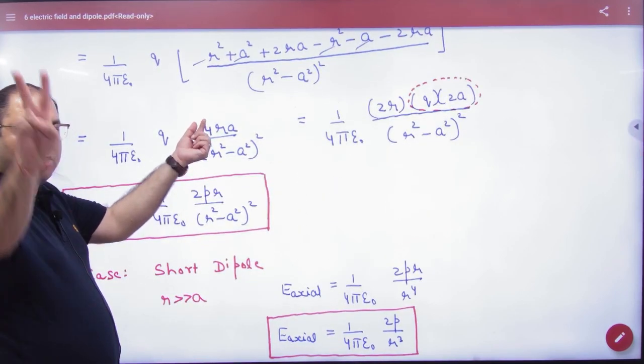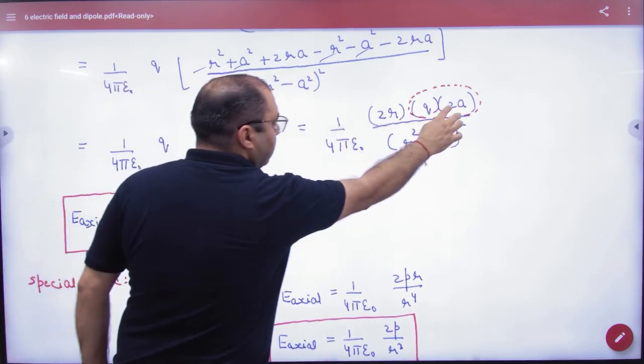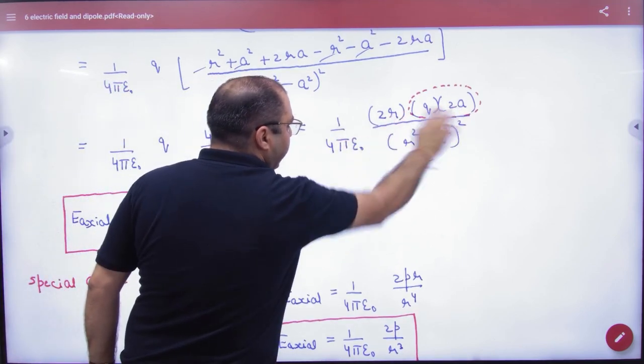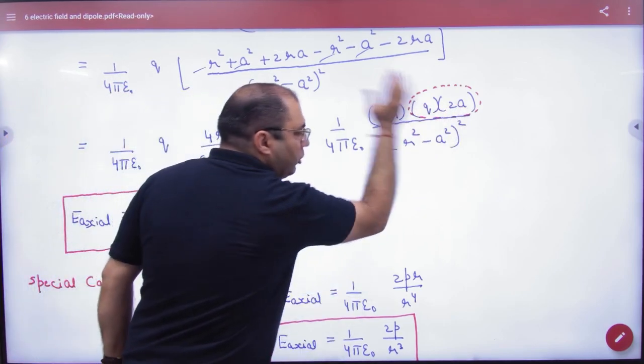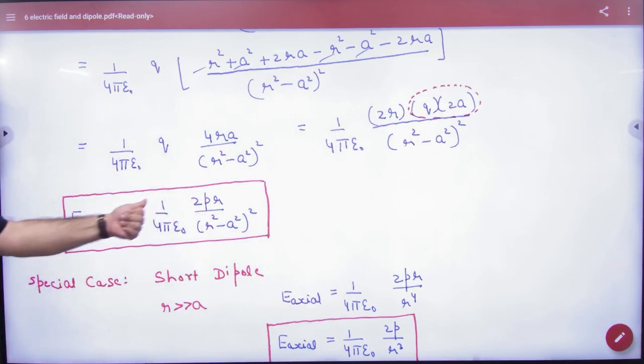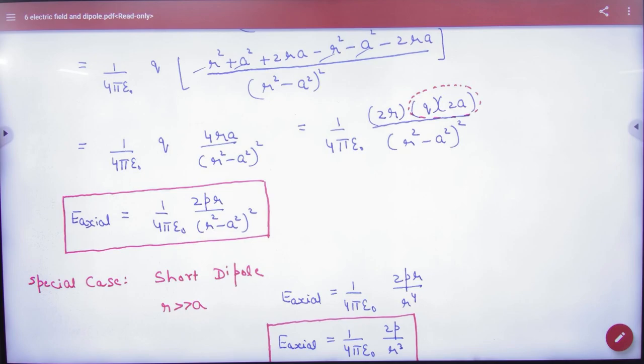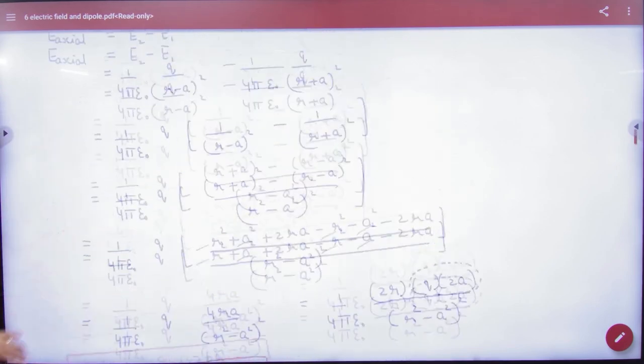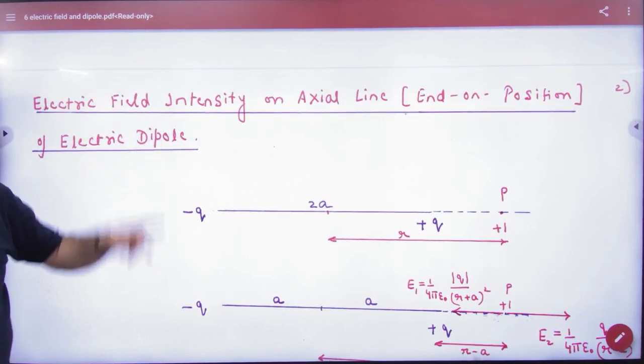4 breaks into 2 times 2. Rearrange the terms. Because q times 2a is P, the dipole moment. So we get the formula: E_axial = 1/(4πε₀) × 2Pr/(r² - a²)². This is the formula for electric field intensity on axial line or end-on position.